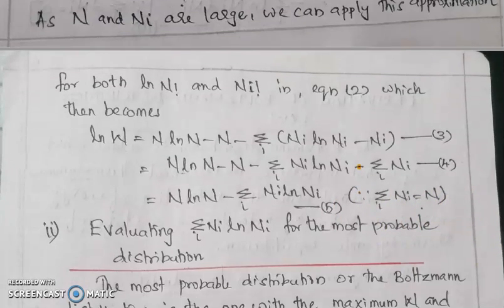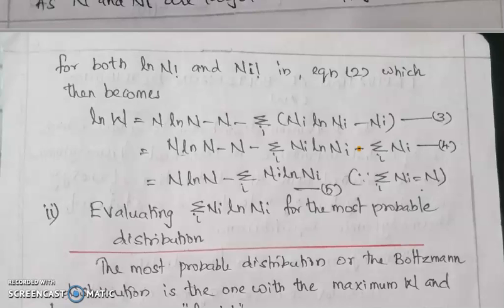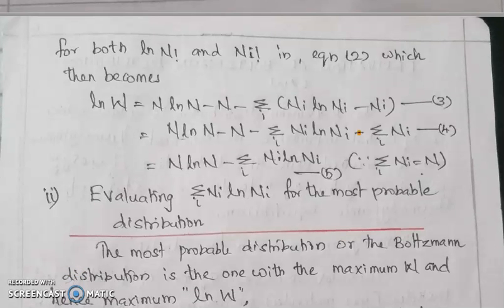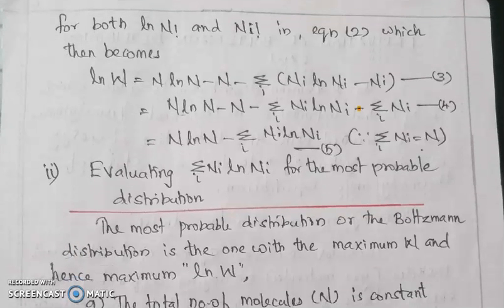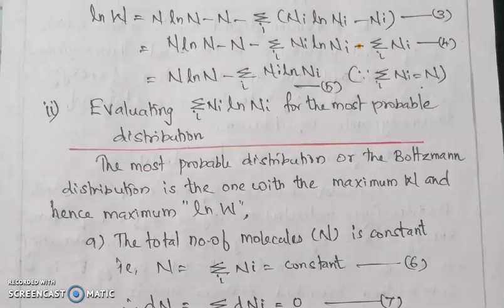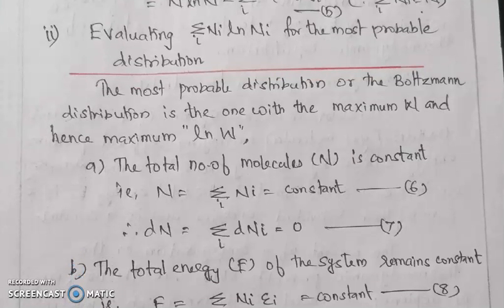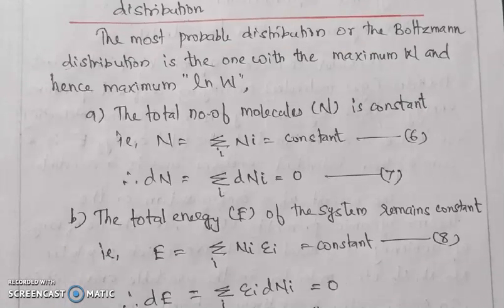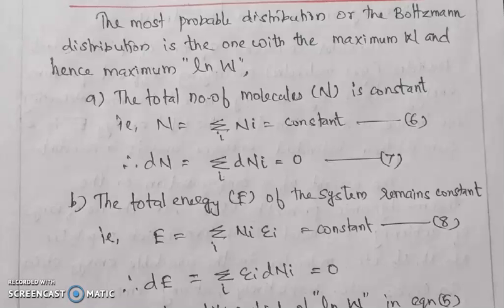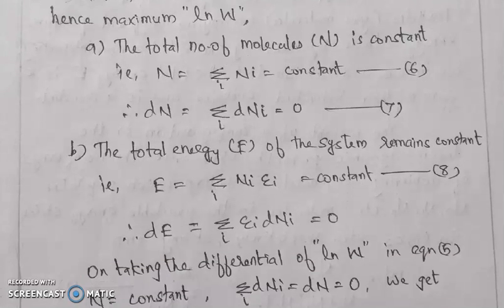Step 2: Evaluating sigma i Ni ln Ni for the most probable distribution. The most probable distribution, or Boltzmann distribution, is one with maximum W and hence maximum ln W. The total number of molecules N is constant, so N equals sigma i Ni equals constant. That is equation 6. Differentiating: sigma i dNi equals 0. That is equation 7.